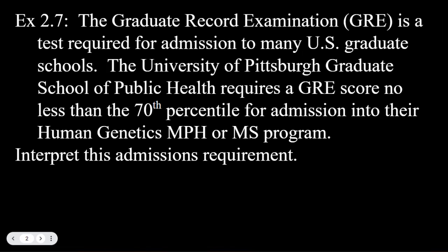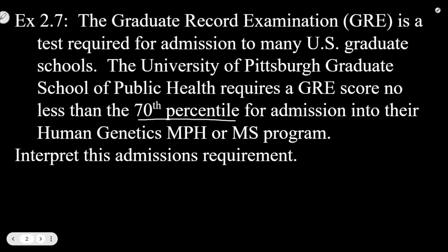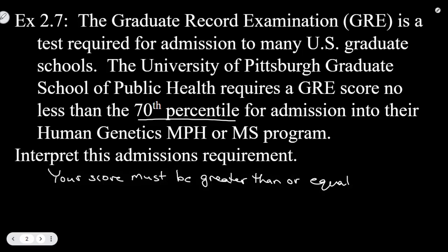Example 2-7: The Graduate Record Examination, the GRE, is a test required for admission to many U.S. graduate schools. The University of Pittsburgh Graduate School of Public Health requires a GRE score no less than the 70th percentile for admission into their human genetics MPH or MS program. Interpret this admission requirement.